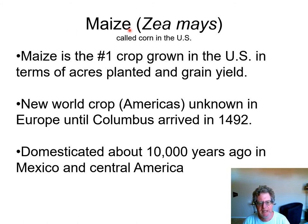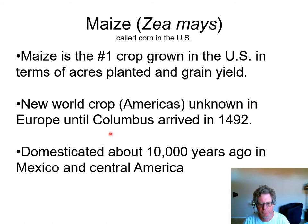We usually call maize corn instead of maize. It's the number one crop planted in the United States — partly due to government policy and partly due to its high grain yield. Before the Europeans came here in the 1400s, it was unknown in the old world. Its domestication traces to about 10,000 years ago back in Mexico.